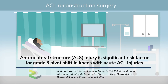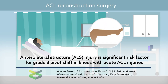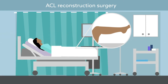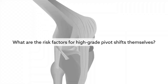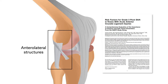Among patients undergoing ACL reconstruction surgery, a high-grade pivot shift before surgery is widely considered to confer an increased risk of graft rupture and persistent instability after surgery. But what are the risk factors for high-grade pivot shifts themselves? A new study published in the American Journal of Sports Medicine reports injury to anterolateral structures as the most important risk factor for high-grade pivot shifts in patients suffering ACL injuries.